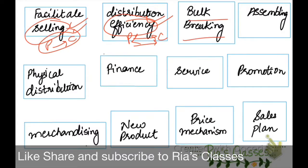Next we have Break Bulking. Goods often come in large bulk quantities. The intermediaries involved in our distribution channel break this bulk as per the requirements of the customer and distribute smaller quantities to them.